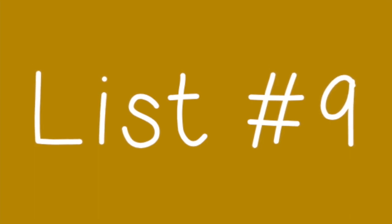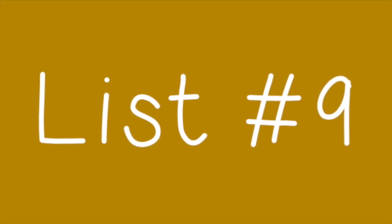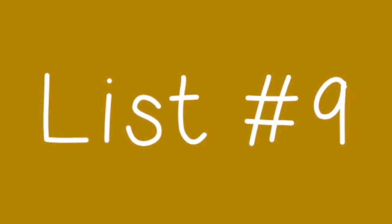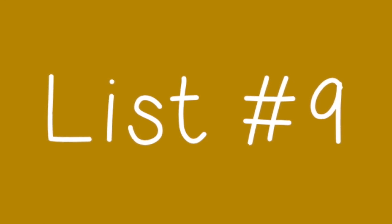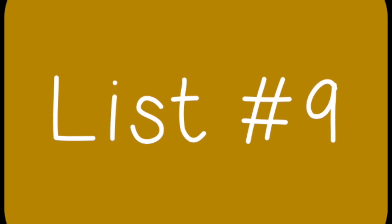You've made it to sight word list number nine. Great job! When you're done with this list, you will know 225 words. Let's get started. First, I'll let you read the word. Then, we'll read it together, putting our finger under it. And then, I'll ask you to read it one more time. Let's go!